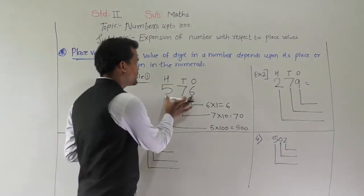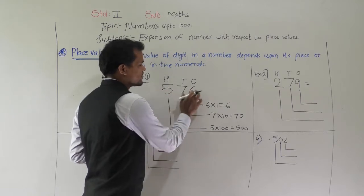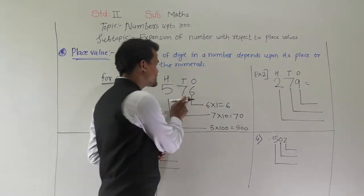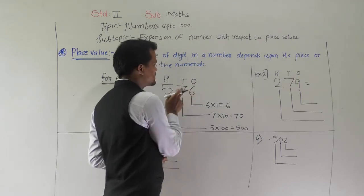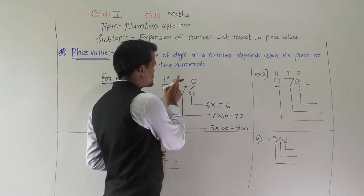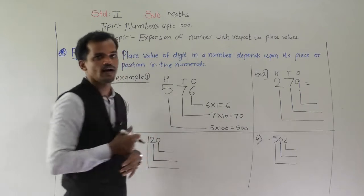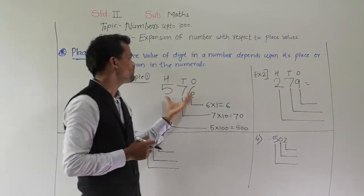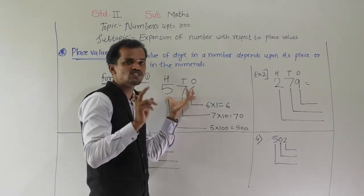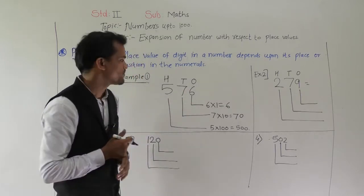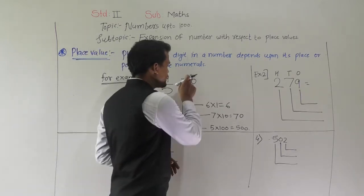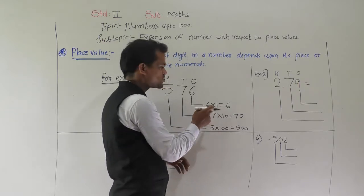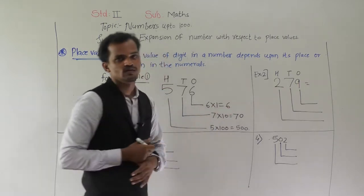See, this is the number 576. In this number, 6 comes at the ones place, 7 comes at the tens place and 5 comes at the hundreds place. Now we will see the place value of each digit. See here, 6 comes at ones place, so 6 times 1 is equal to 6.